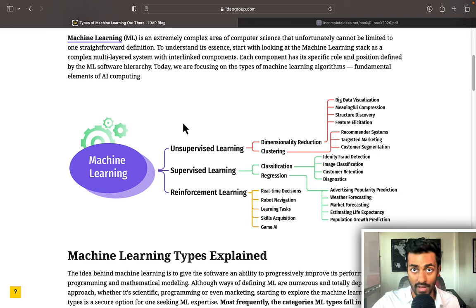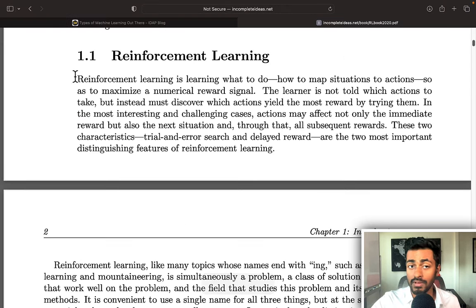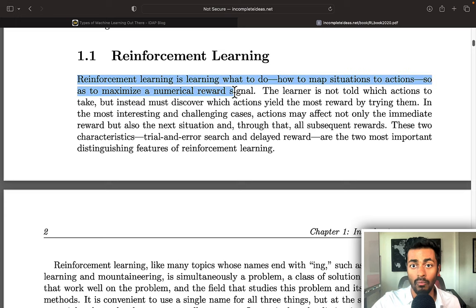The second is unsupervised learning where we have data but we don't have a label and the primary objective is to understand patterns within the data. So this is used in clustering and dimensionality reduction among others. And then the third pillar is reinforcement learning. From the textbook, reinforcement learning is learning what to do, that is how to map situations to actions, so as to maximize a numerical reward signal.